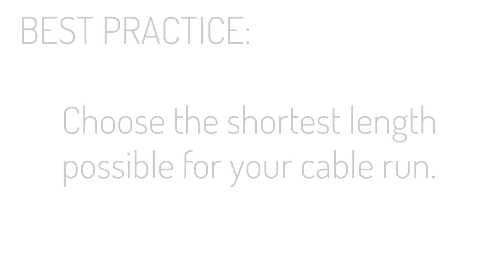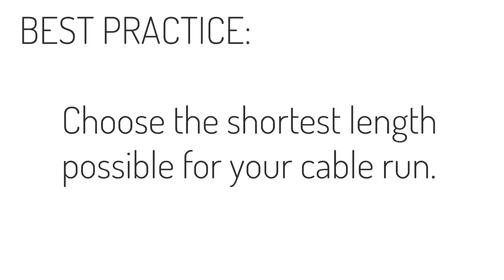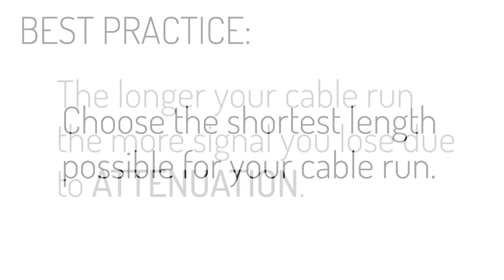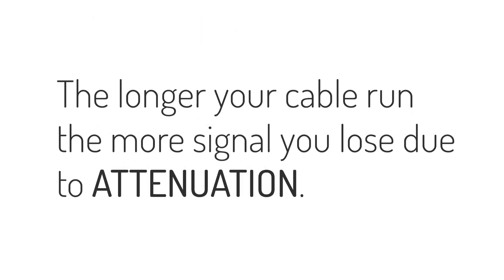Moving on to how to pick a cable — this is an often overlooked but important part of your Wi-Fi setup. Step one is the length: you always want to go with the shortest length possible for your cable run. This is because of signal loss or attenuation — the longer the cable, the more signal you will lose between the antenna and the radio.